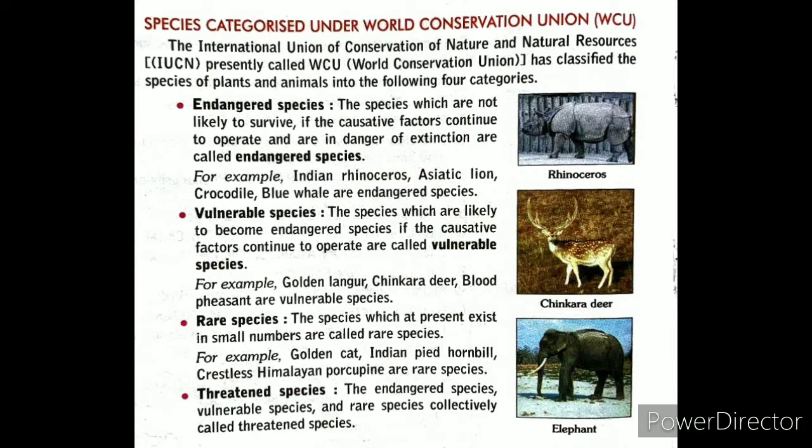The next is the Vulnerable species — species which are likely to become endangered if the causative factors continue to operate. Ye species bahut jaldi endangered species ban sakti hain agar jo causative factors hain wo continue hote rahein. Examples include Golden Langur, Chinkara Deer, and Blood Pheasant.